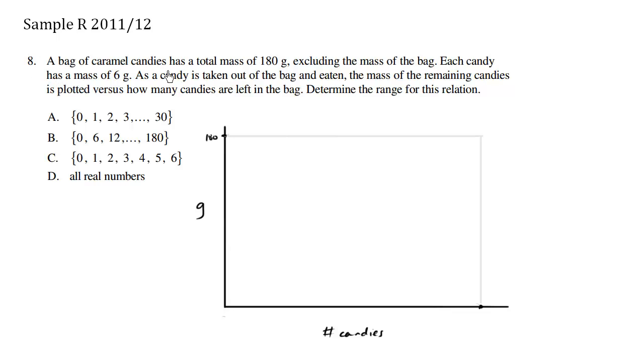A bag of caramel candies has a total mass of 180 grams. We have grams here, 180, excluding the mass of the bag, so we're just talking about the mass of the candies itself.